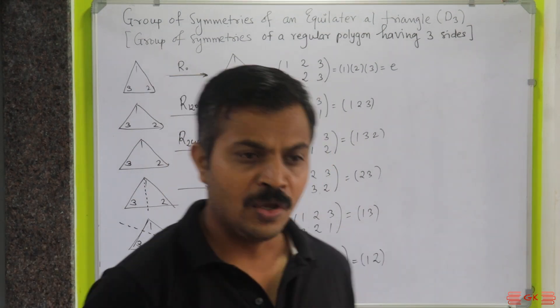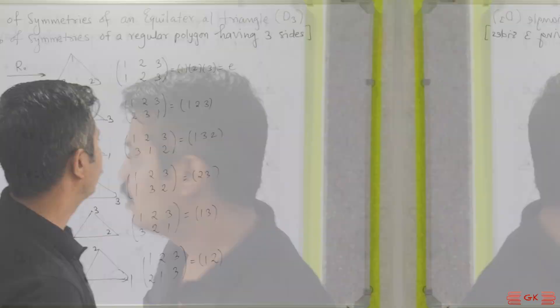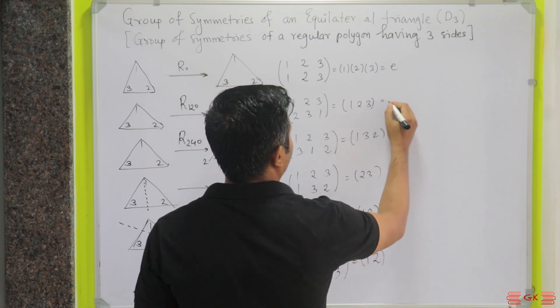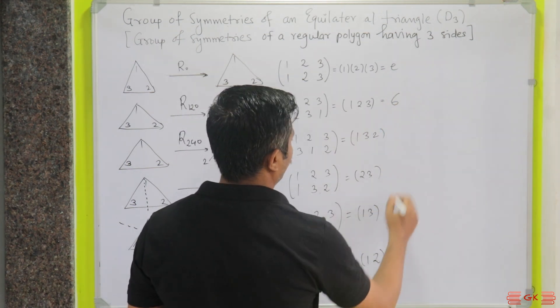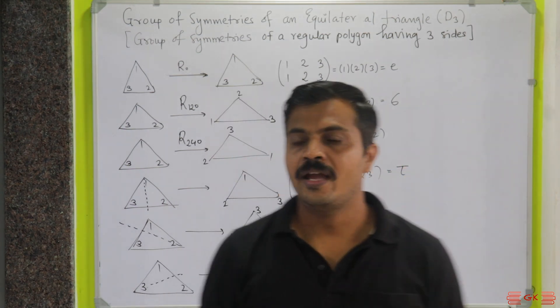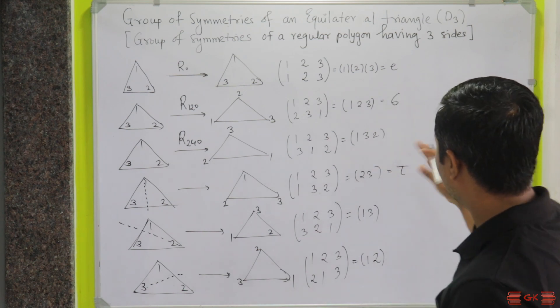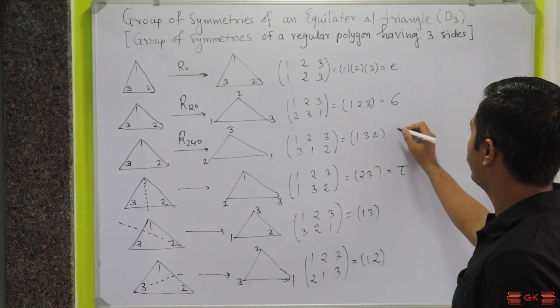Now here, we are going to use notations for all these elements. So I am going to call it sigma, and this one I am going to call tau. Let us do the calculations and see what we actually get.